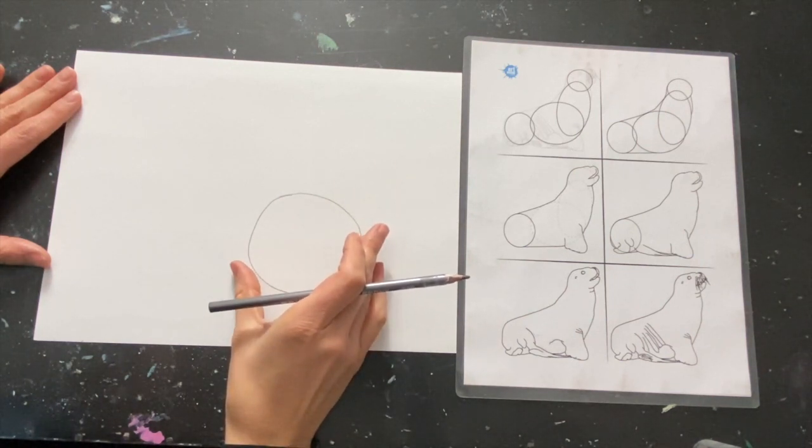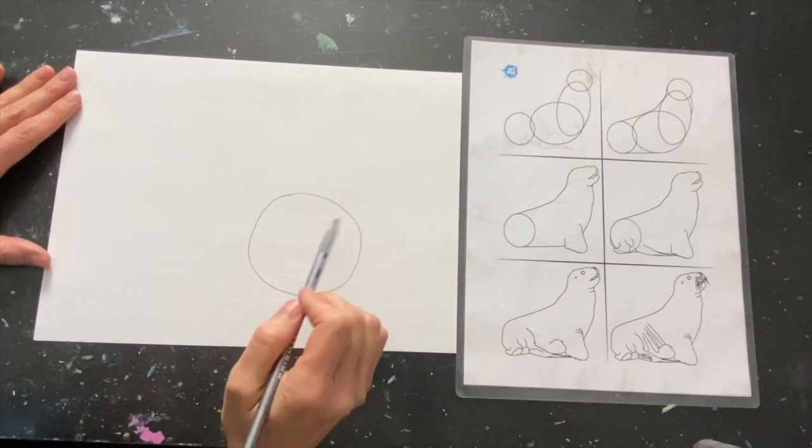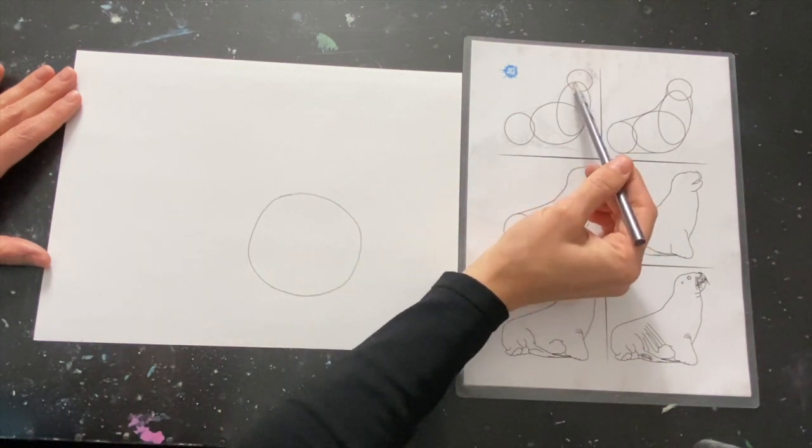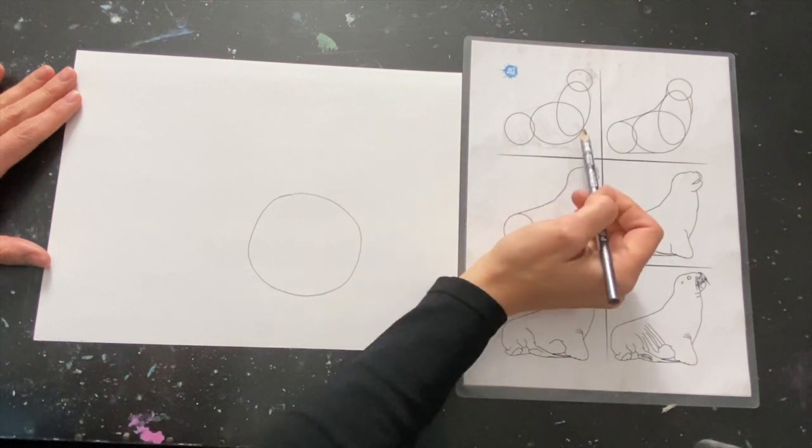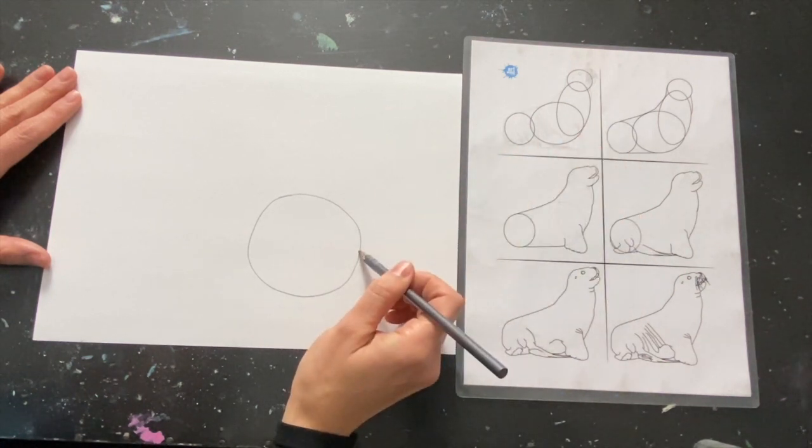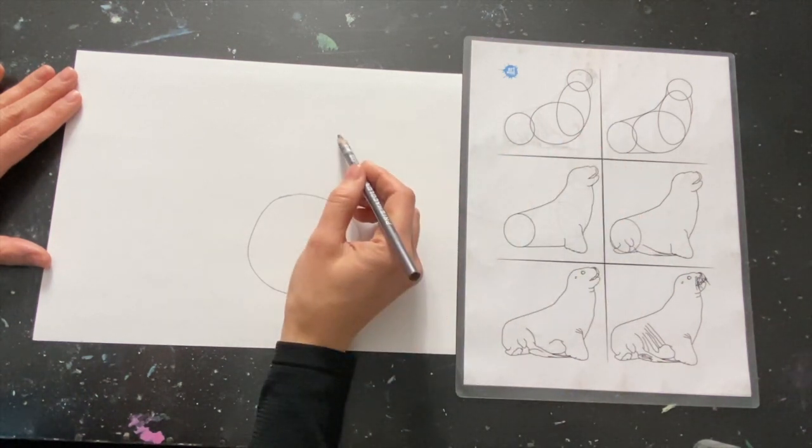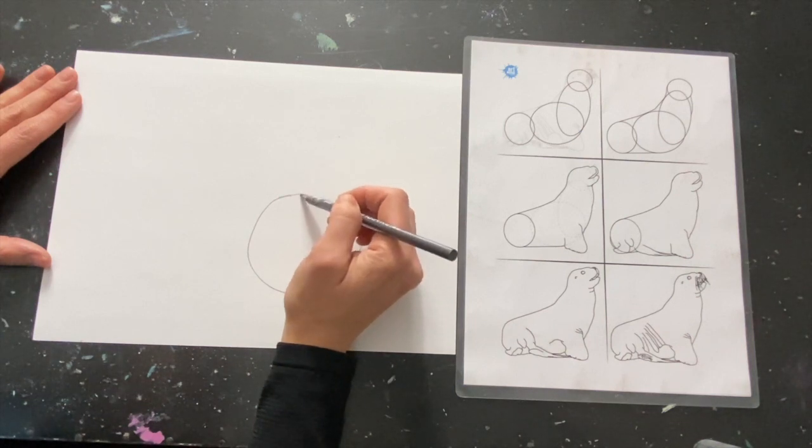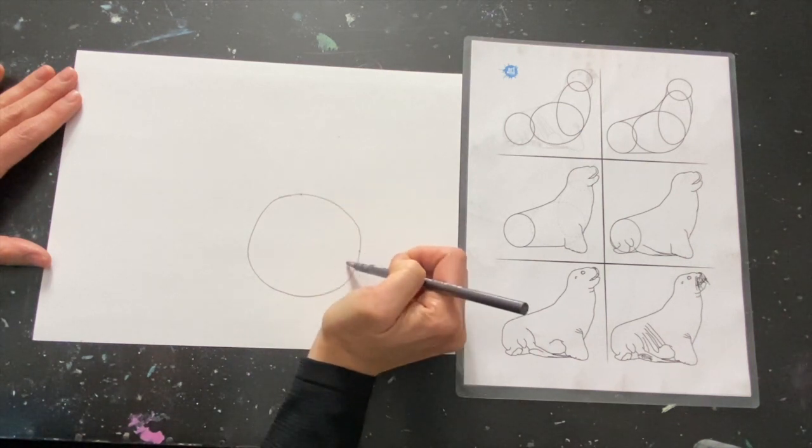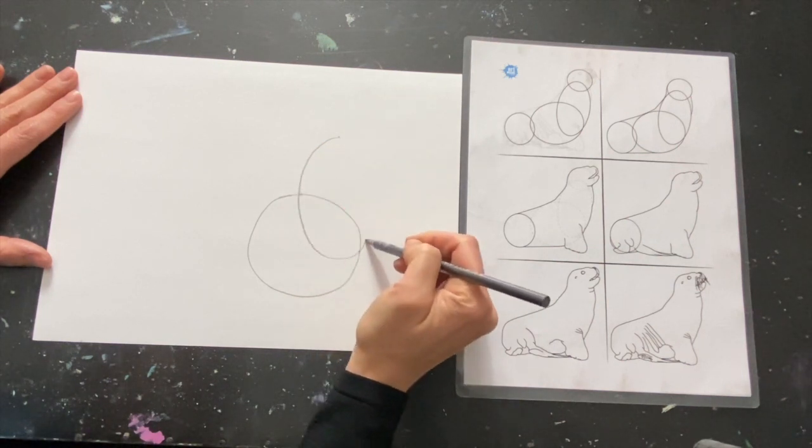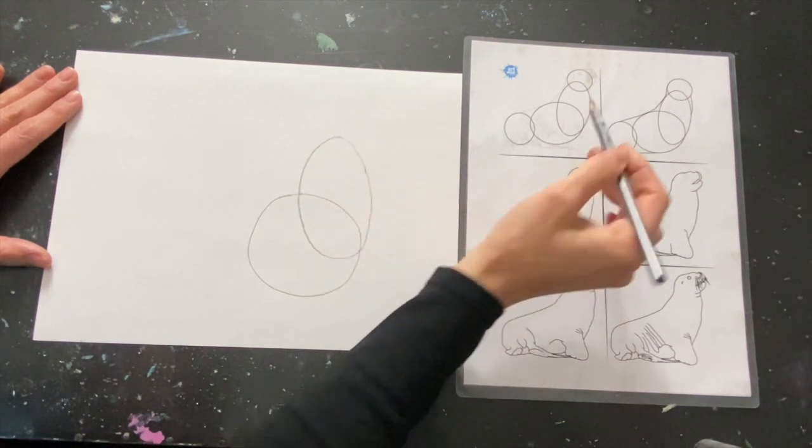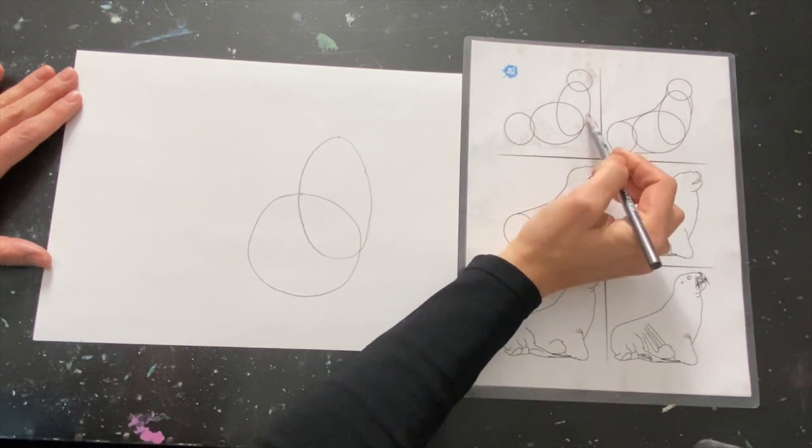From here I'm going to move on to the second largest shape, which is this oval. Now notice how it touches the circle about here, it goes up to about this height, and it dissects the circle almost in the middle. I'm going to go ahead and get that shape in as best I can. Notice how it goes straight up and down here, it doesn't push out too much here, so I want it going straight up and down here as well.